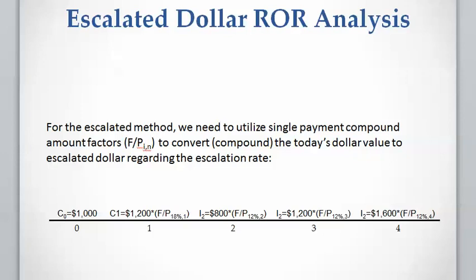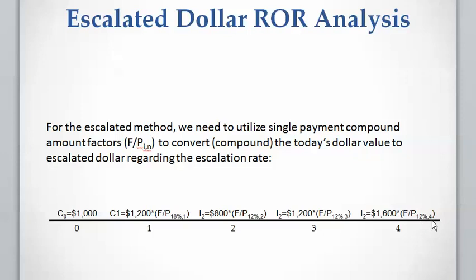The payment at year zero is not going to be affected by escalation, so it stays unchanged. The cost of twelve hundred dollars at year one will be compounded with the 18 percent escalation rate, with a compounding period of one. The income of eight hundred dollars at year two will be escalated at 12 percent with a compounding period of two years. Similarly, the income of twelve hundred dollars at year three uses a 12 percent escalation rate with a three-year compounding period, and the sixteen hundred dollar income at year four uses a 12 percent escalation rate with a four-year compounding period.